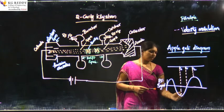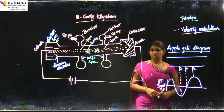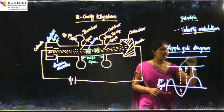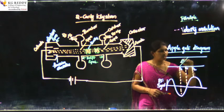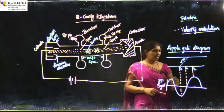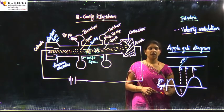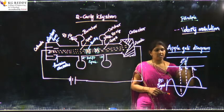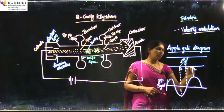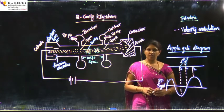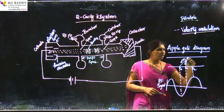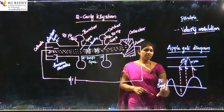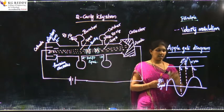The early electron is subjected to the negative RF input, so it moves slowly — its velocity V is less than V₀. The reference electron meets zero RF input, so there is no change in its speed; it moves with V equal to V₀. The late electron is subjected to positive RF voltage; since the electron is a negative charge, it is attracted by the positive energy and moves very fast, with speed greater than V₀. Because of the RF signal interaction, the electron velocities change, and then bunching takes place.